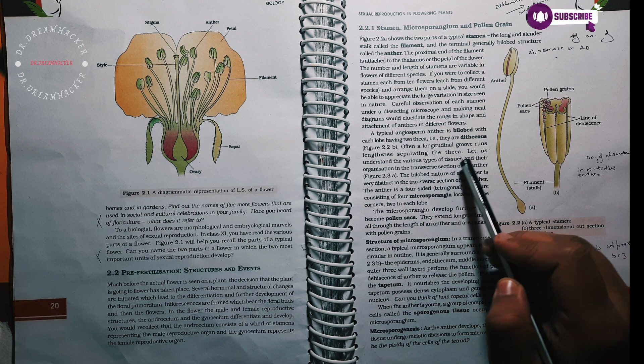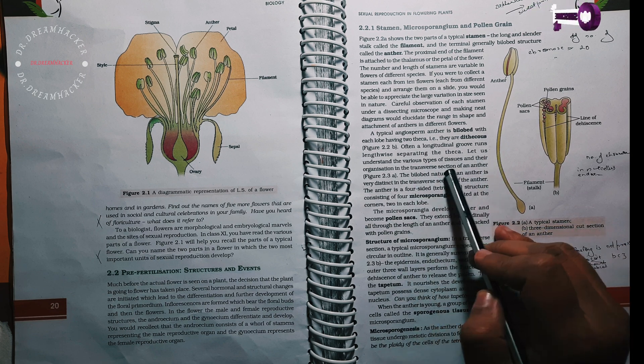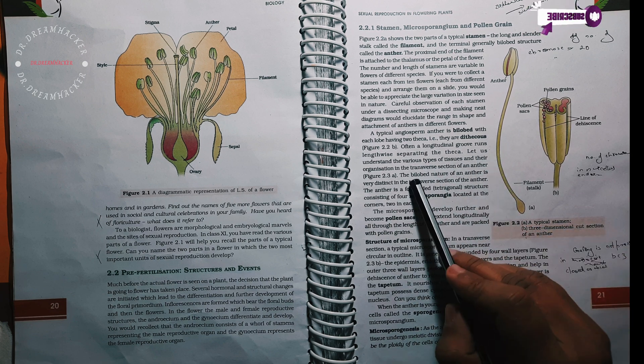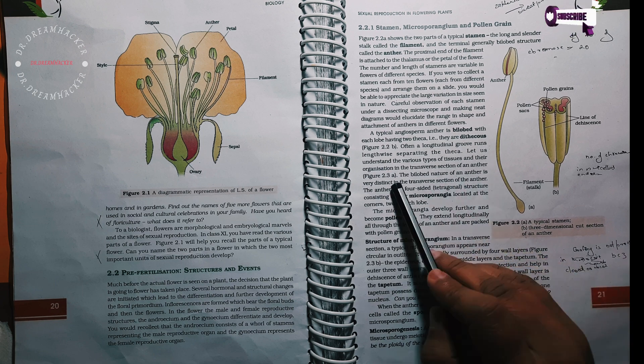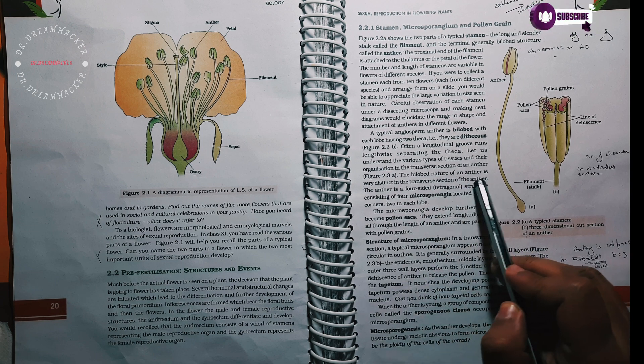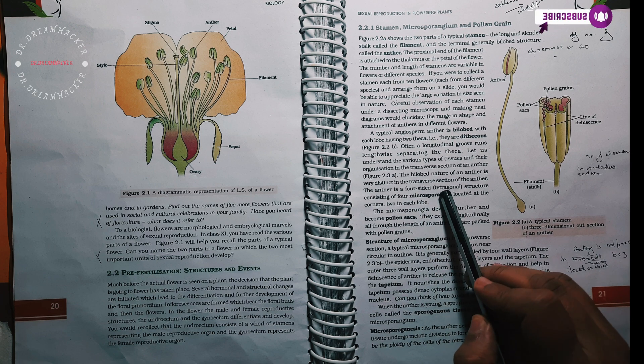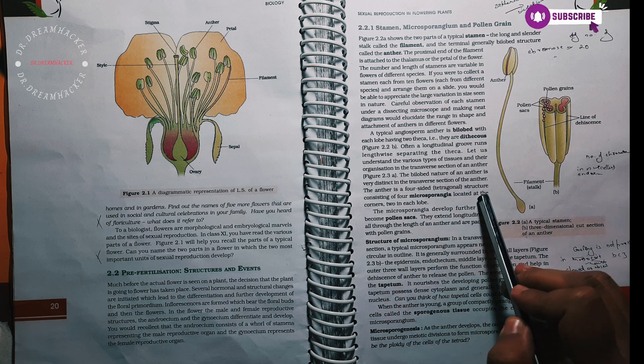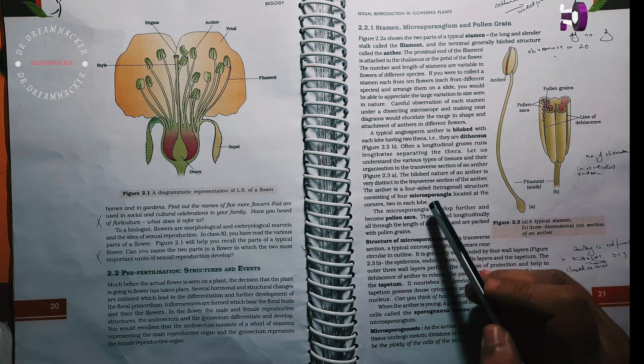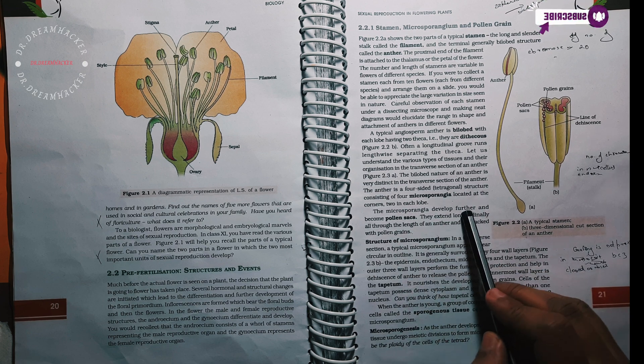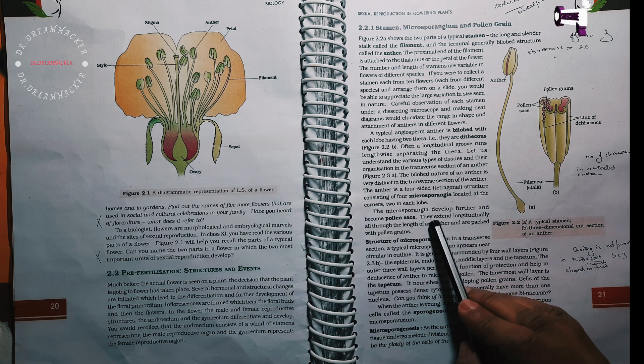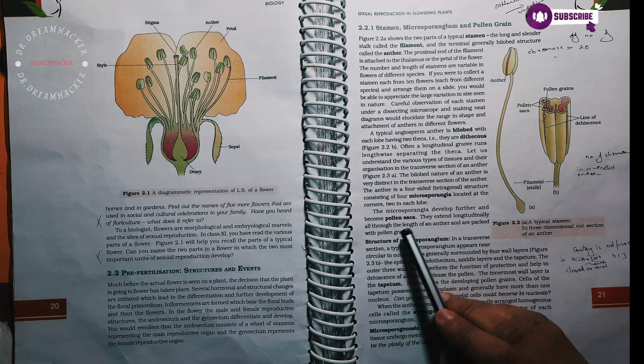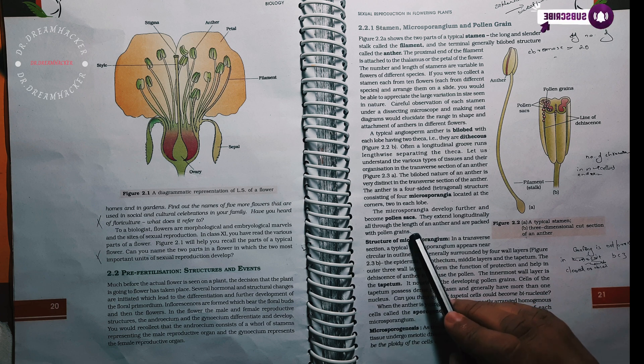Let us understand the various types of tissues and their organization in the transverse section of an anther. The bilobed nature of an anther is very distinct in the transverse section of the anther. The anther is a four-sided structure consisting of four microsporangia located at the corners, two in each lobe. The microsporangia develop further and become pollen sacs. They extend longitudinally through the length of an anther and are packed with pollen grains.